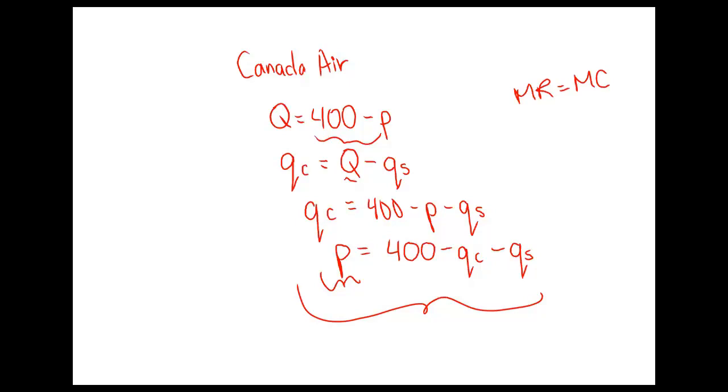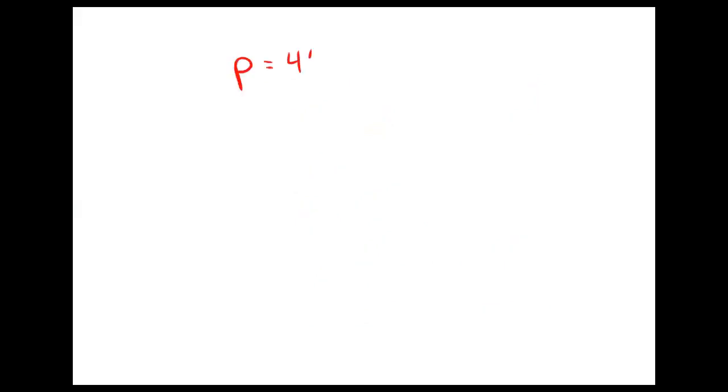We can use calculus to do this or we can just know the rules of how marginal revenue relates to the demand curve. We have the inverse residual demand function for Canada Air, and from this we can immediately get the marginal revenue curve. Since this demand curve is linear, marginal revenue will also be linear with the same Y intercept and twice the slope. So we'll put in the constants, which form the Y intercept, and then we have minus 2QC because this is a slope of minus 1, so this curve has a slope of minus 2.